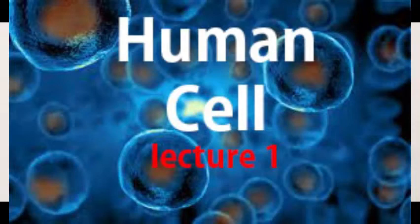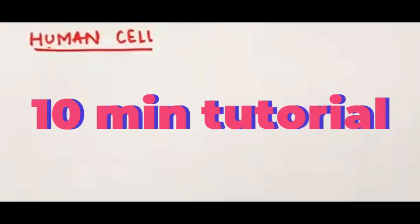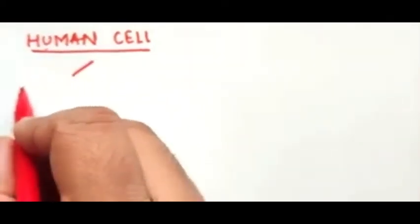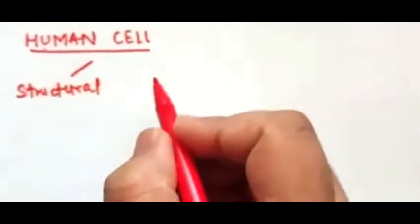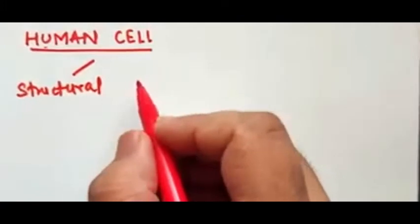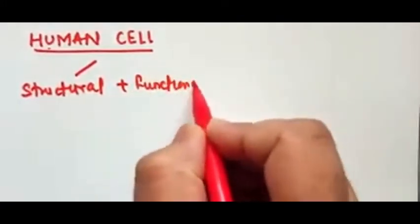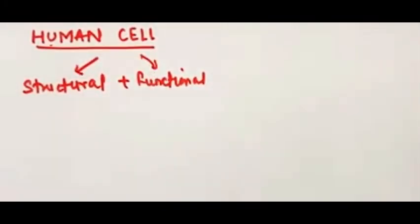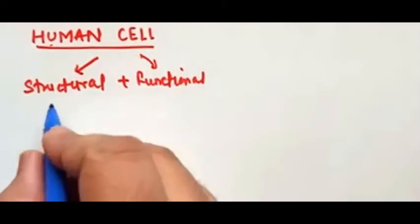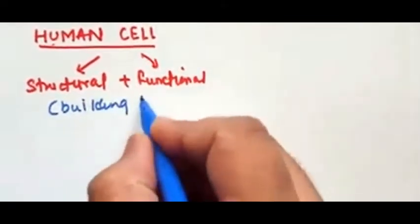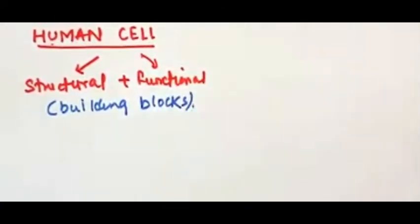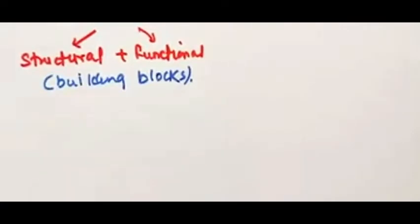Welcome to the physiotherapy tutorials lectures. Today we are going to talk about human cells. The human body has basically trillions of cells, and these human cells are called the structural as well as the functional unit of the human body. They are also sometimes referred to as the building blocks of the human body.